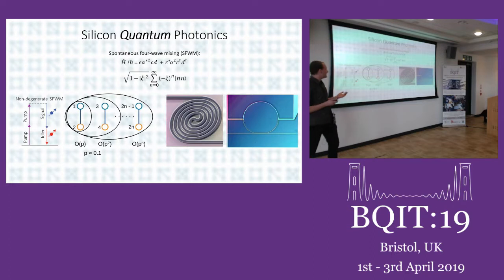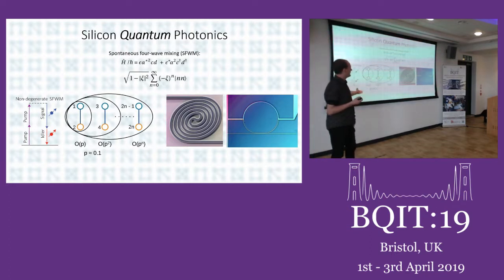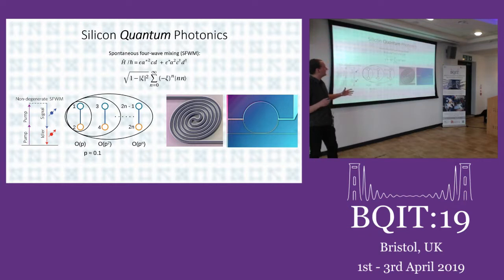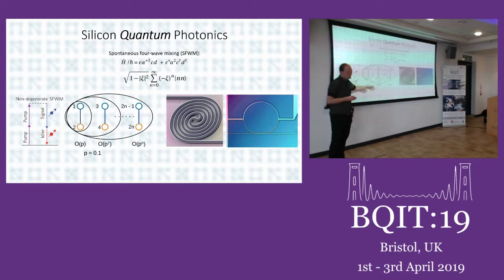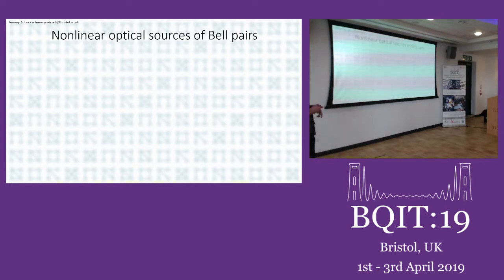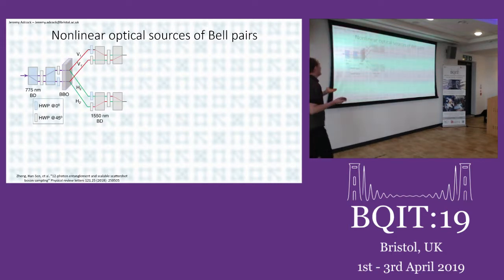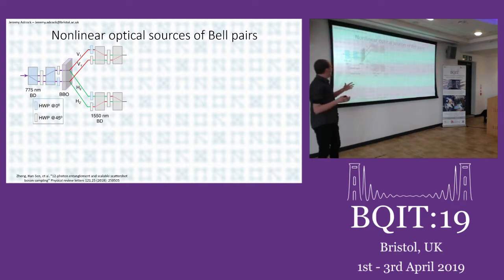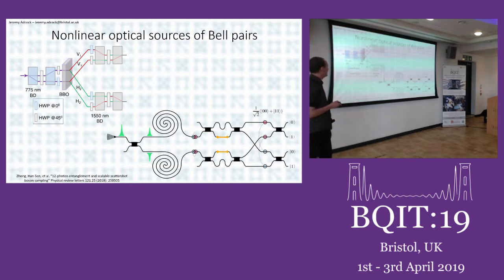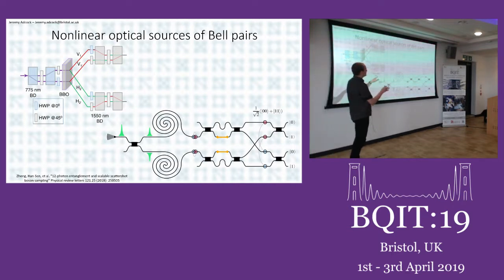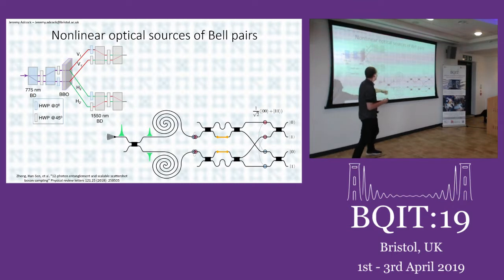We generate photons using spontaneous four-wave mixing, from the third-order nonlinearity of silicon. Essentially you coherently convert pump photons from a bright pump beam into signal and idler bands. These photons come in pairs, and if you want n of them you have to wait for probability p^n — the exponentially poor scaling currently limiting us to 12 photons at a time. In silicon chips there are two structures used: a long waveguide and a ring resonator, which increases field strength. We can engineer these sources so the pairs come out entangled, erasing which-path information to get a Bell state.